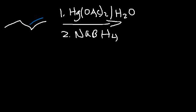The end product will be an alcohol. The alkene will be converted into an OH hydroxyl group, and the regiochemistry is Markovnikov addition. That is, we're going to add the OH to the part of the double bond that's more substituted — the secondary carbon, as opposed to the primary carbon. We're going to add it to the carbon that has fewer hydrogen atoms. So, this is the major product.